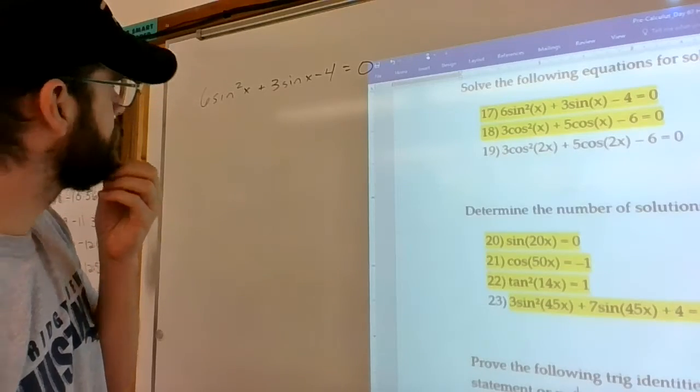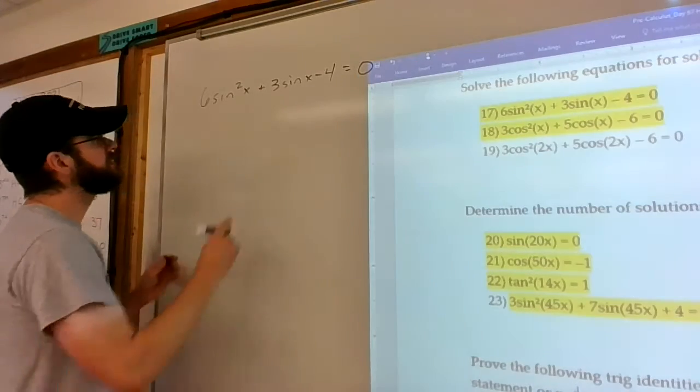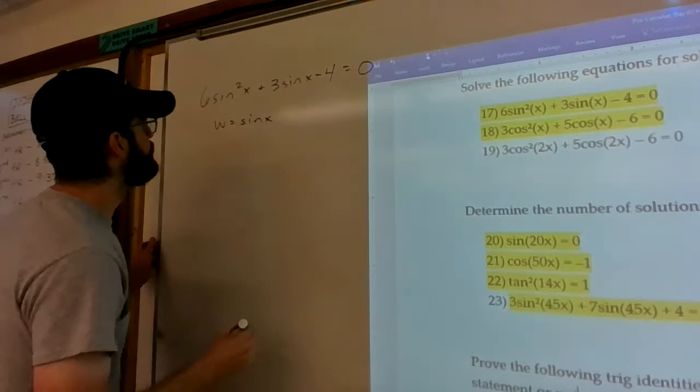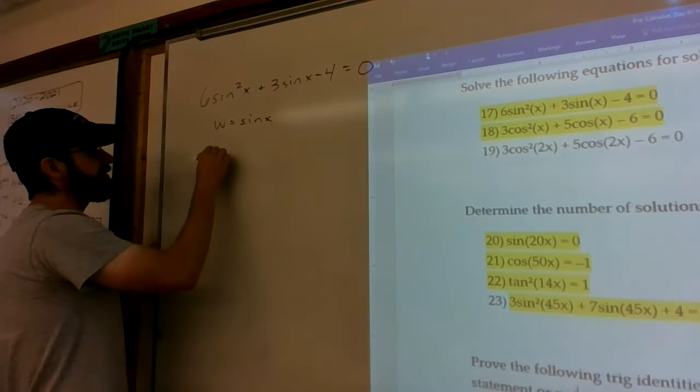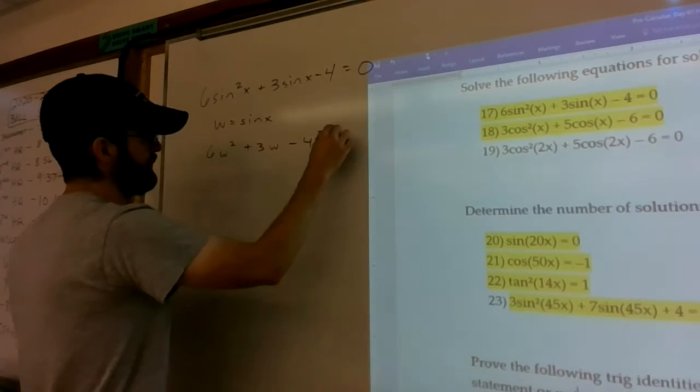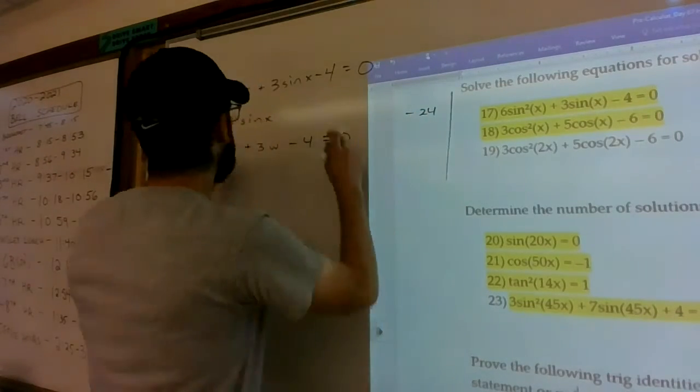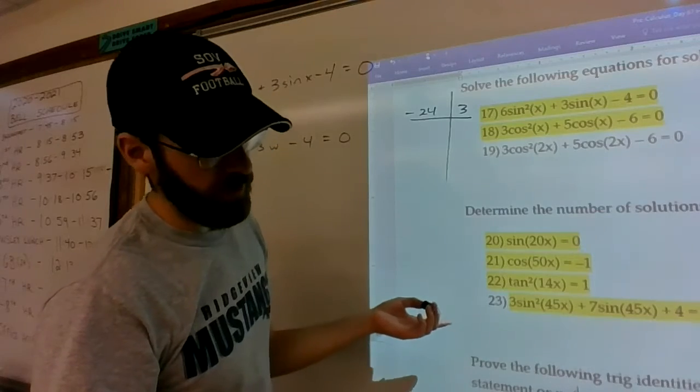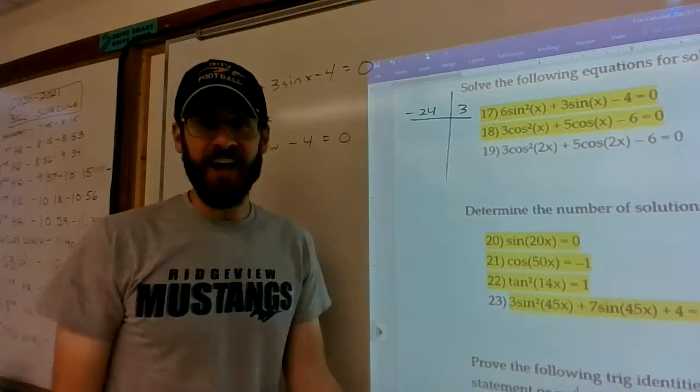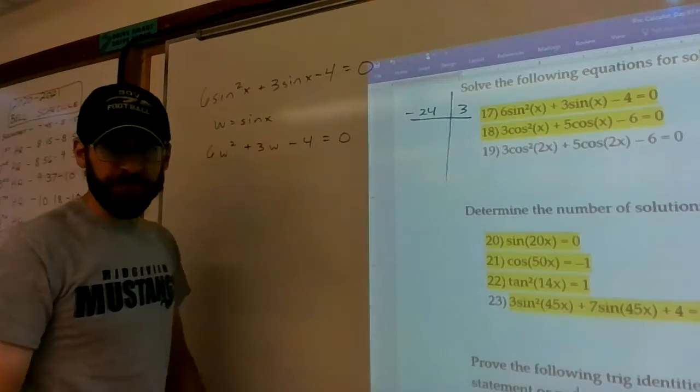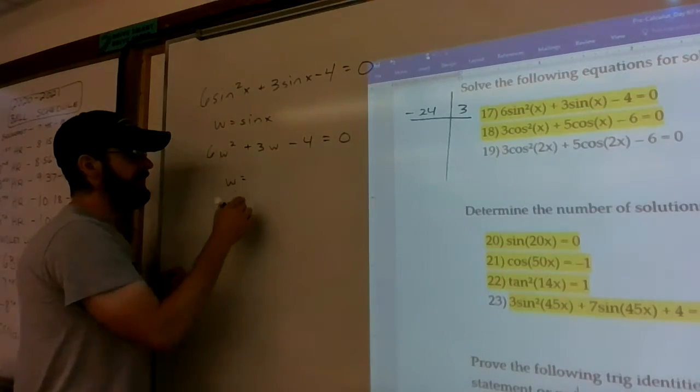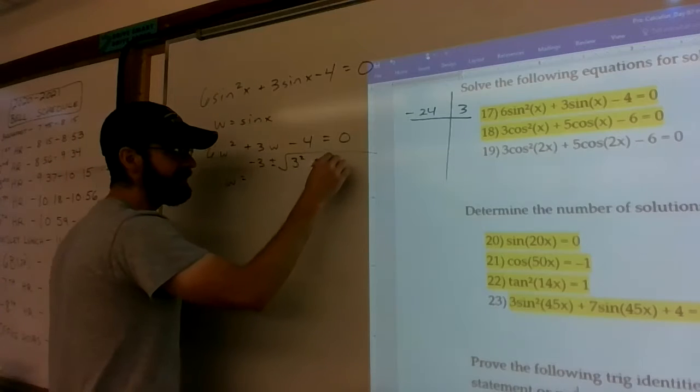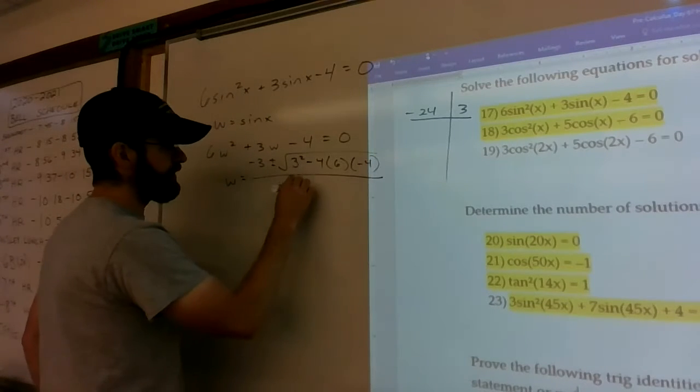Is this factorable? Maybe. I'm going to do a w substitution. I'm not seeing it right away. So 6w squared plus 3w minus 4 equals 0. So if you're talking negative 24, that adds up to 3. It's not going to be negative 24 and 1. It's not going to be 2 and negative 12. 3 and 8, no. 4 and 6, no. It's not factorable. Quadratic formula. Negative b plus or minus the square root of b squared minus 4 times a times c all over 2 times a.